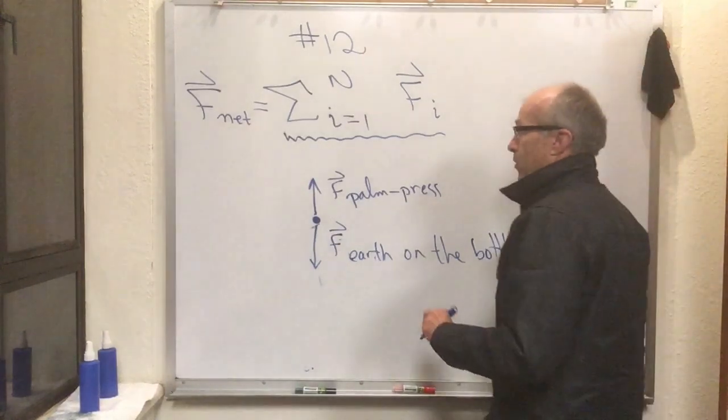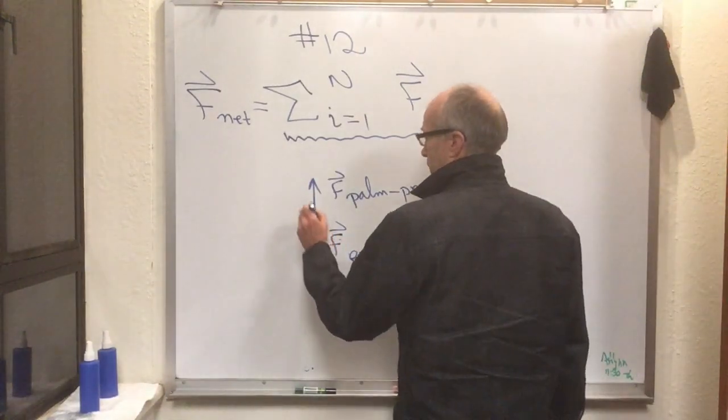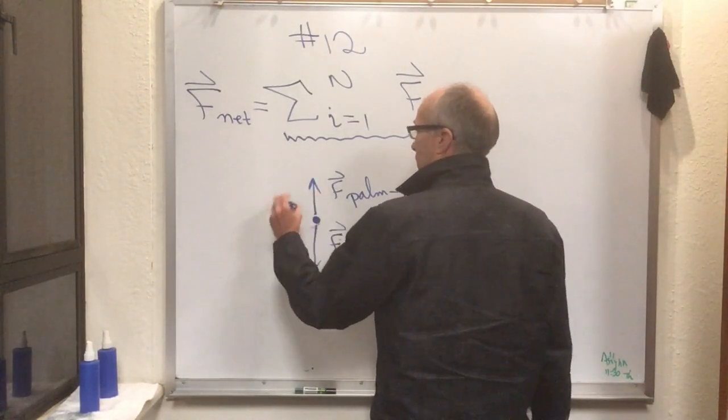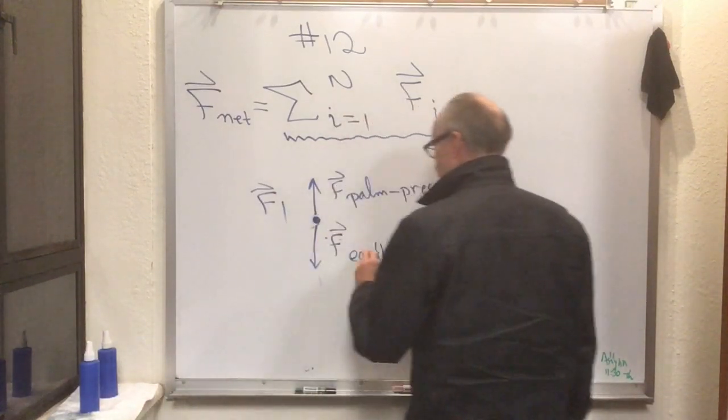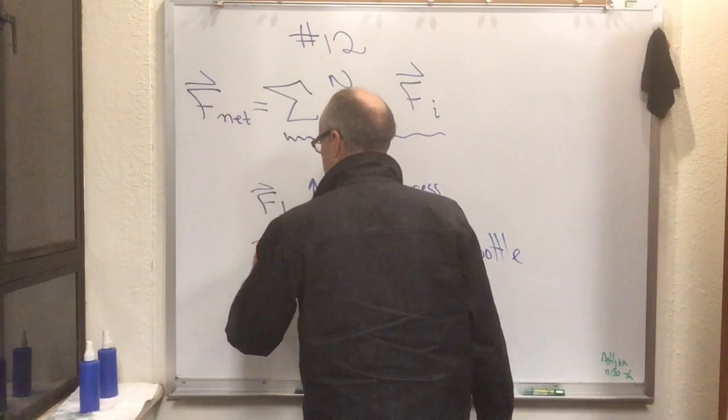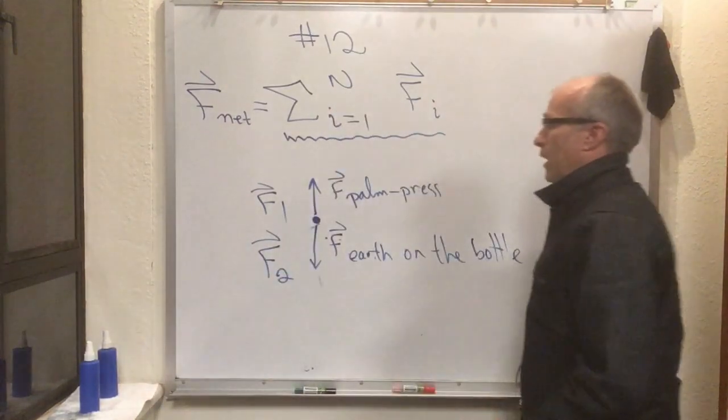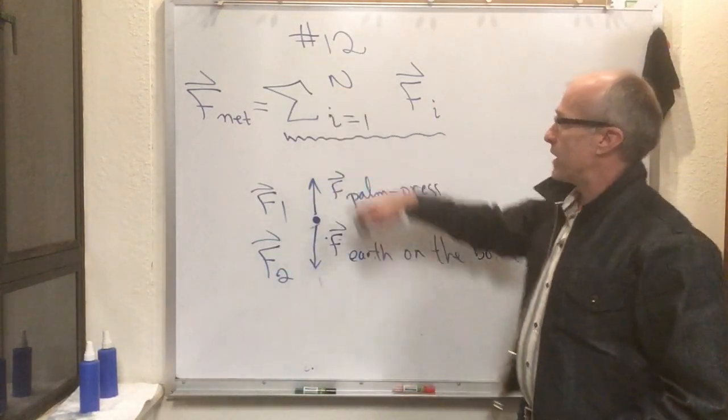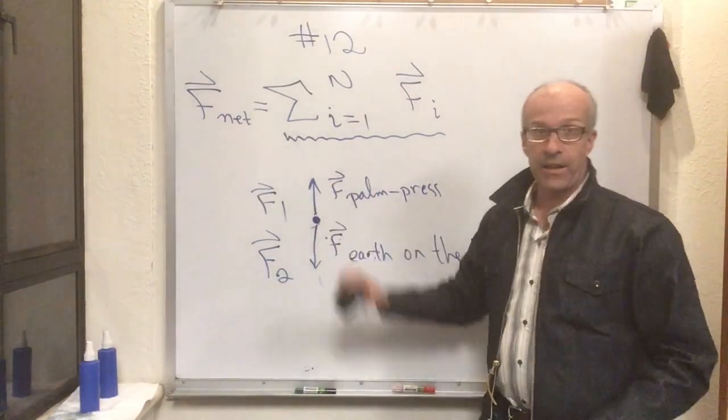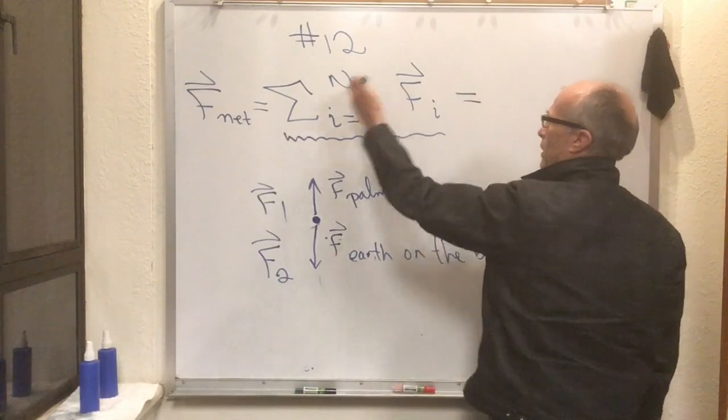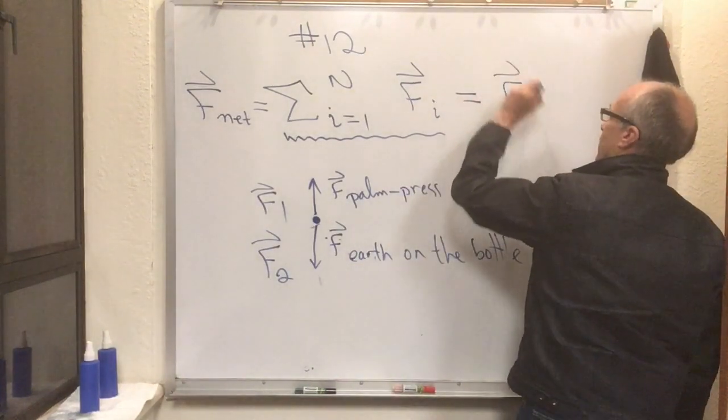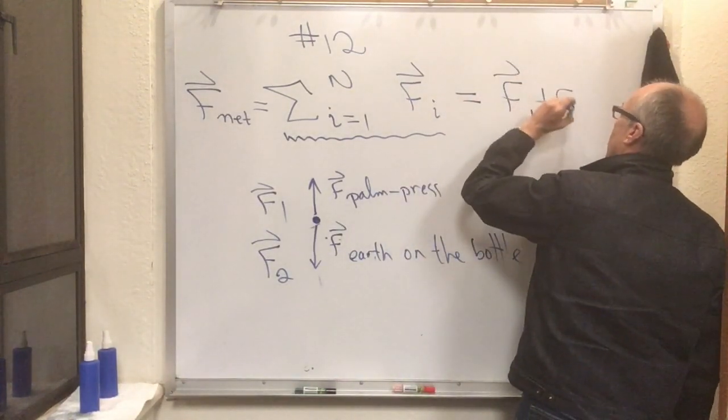Okay, so this is an example where there are two forces. I could call this one, instead of all these subscripts, F sub 2. And so in this equation up here, n is two. There's two forces acting on this particle. All this means then, this fancy notation means in this case, is that F is F1 plus F2.